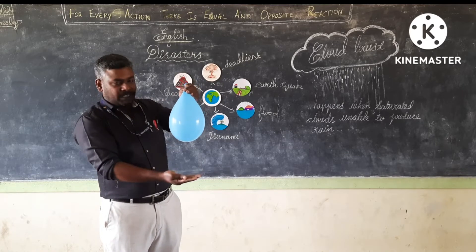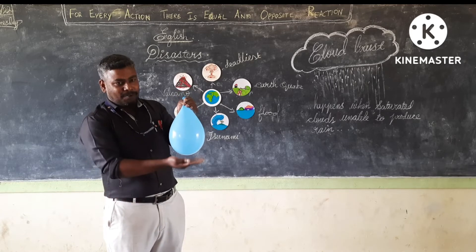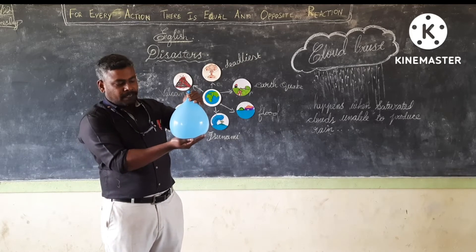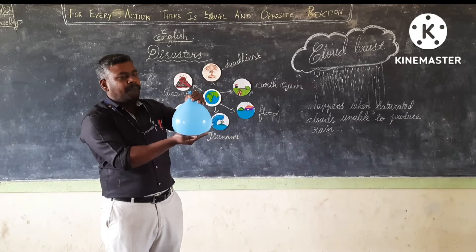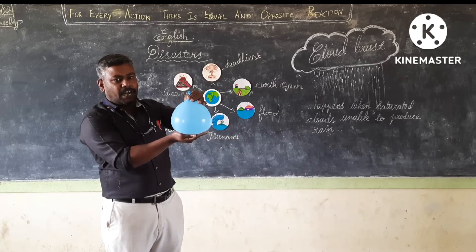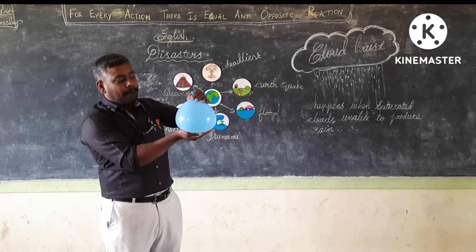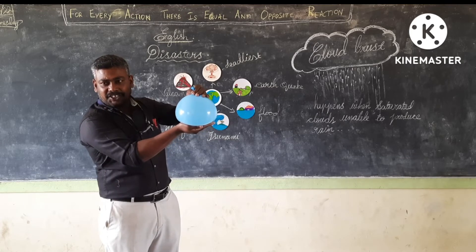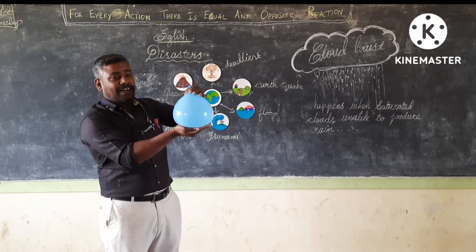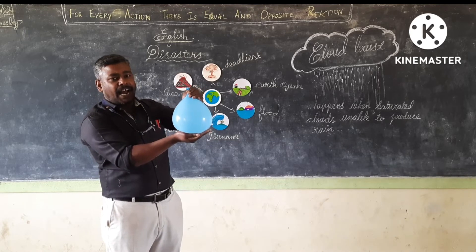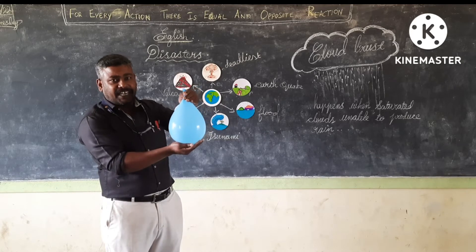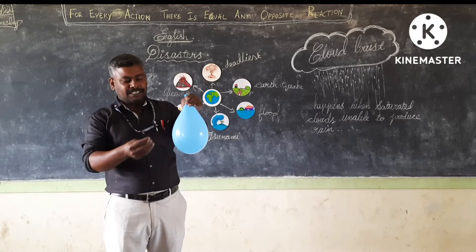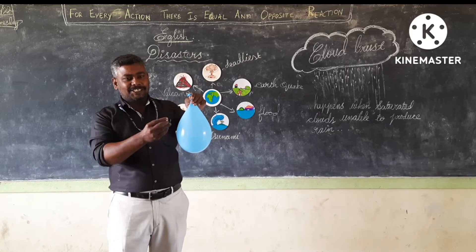When the warm air blocks the saturated cloud, what will happen? Pressure keeps building. At one point, unable to sustain that pressure, the cloud bursts. This is what happens.